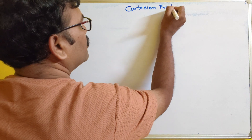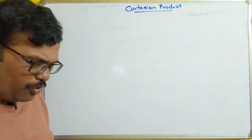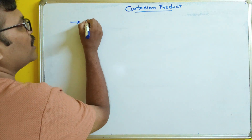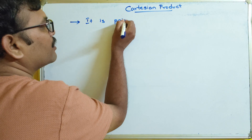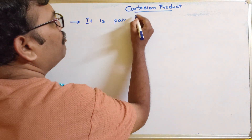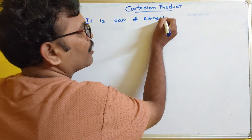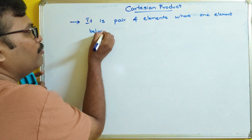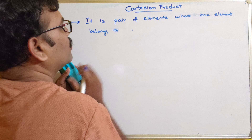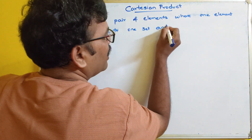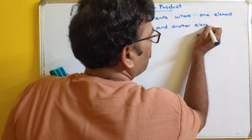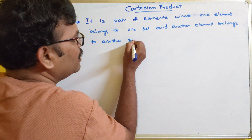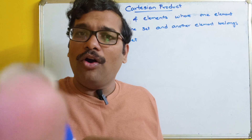Cartesian product. So what is this Cartesian product, how is it represented, and how can we find it? The Cartesian product is a pair of elements where one element belongs to one set and another element belongs to another set. So this Cartesian product is implemented on two different sets.